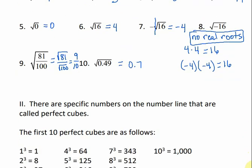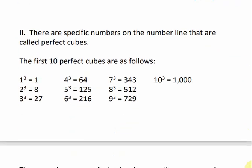There are also specific numbers on the number line that are called perfect cubes. The first 10 perfect cubes are as follows: 1, 8, 27, and so on. These numbers are called perfect cubes because we can multiply another number times itself three times to get that number. 8 is a perfect cube because 2 times 2 times 2 is 8. 343 is a perfect cube because 7 times 7 times 7 is 343.